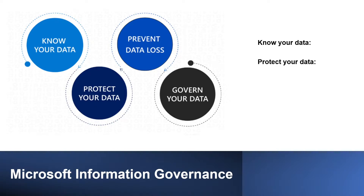The second step is to protect your data. Organizations can apply flexible protection actions including encryption, access restrictions and visual markings. The third step is to prevent data loss. Organizations can detect risky behavior and prevent accidental oversharing of sensitive information.